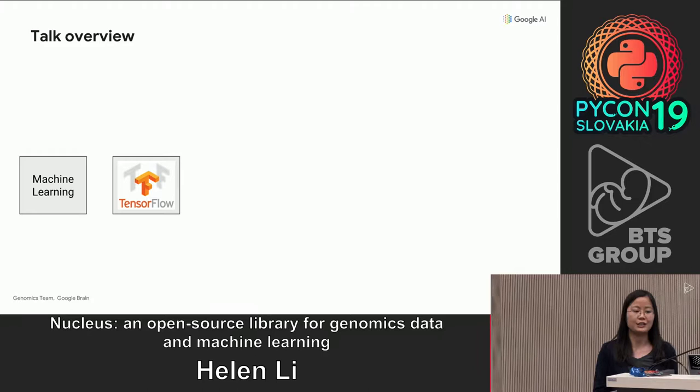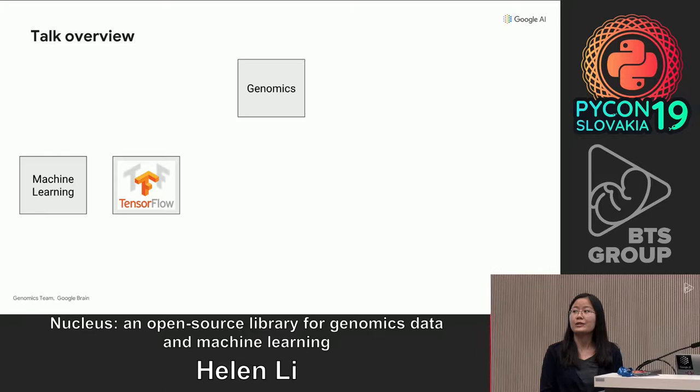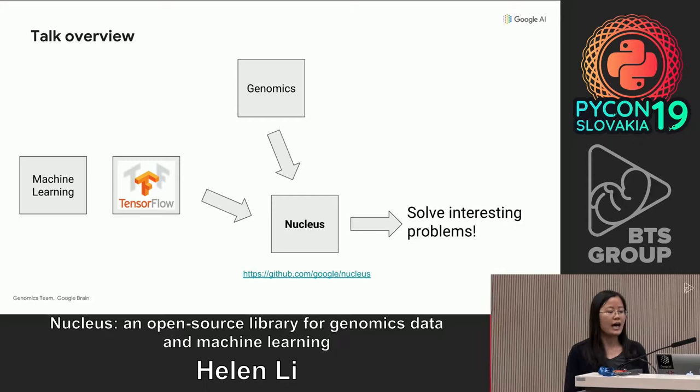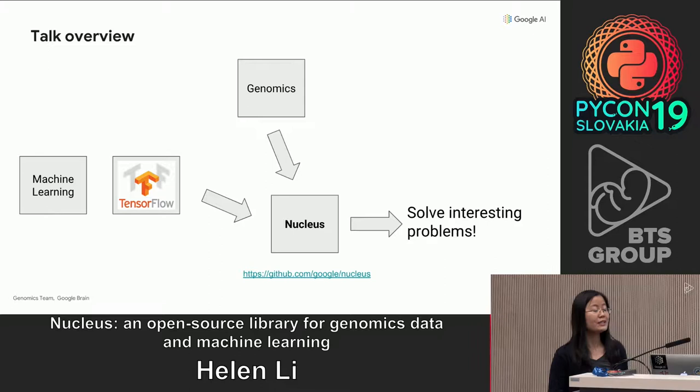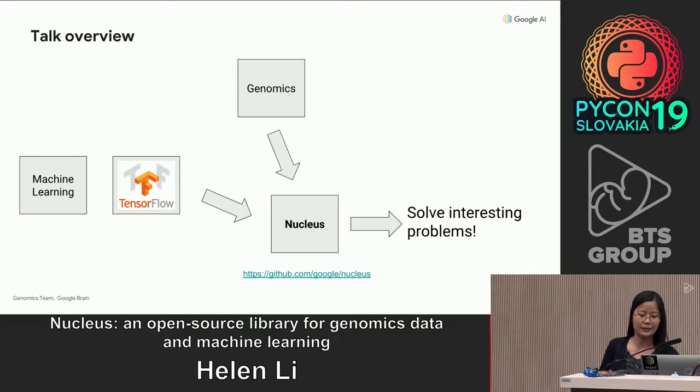I will talk about Nucleus, an open source library to simplify applying machine learning to genomics data. In today's talk, I'll first go over what machine learning is and a popular machine learning framework called TensorFlow. Then I will talk about genomics, what it is, and why do we care. The main focus for my talk will be Nucleus and how Nucleus brings TensorFlow and genomics together to solve interesting problems.